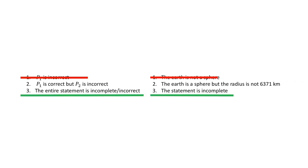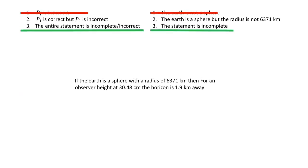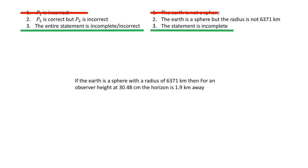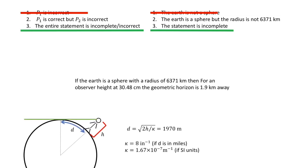At this point we have to reconsider. We can take the statement: if the earth is a sphere with a radius of 6,371 kilometers, then for an observer at a height of 30.48 centimeters the horizon is 1.9 kilometers away. But we have to add a word to make the statement complete — specifically the word 'geometric' — because that is what this equation describes. But that is a statement that is pretty difficult to test.